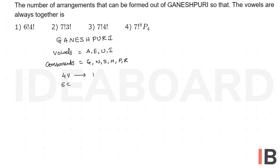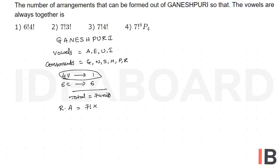Six consonants considered as six units, giving a total of seven units. The required number of arrangements equals seven factorial, and internally the four vowels can be arranged among themselves in four factorial ways. So the correct answer is the third option.